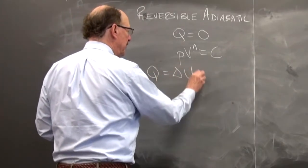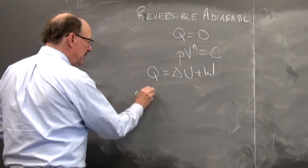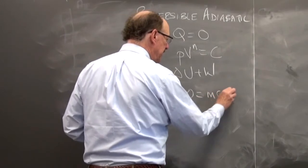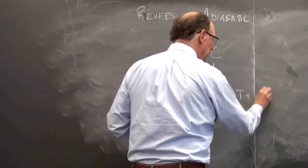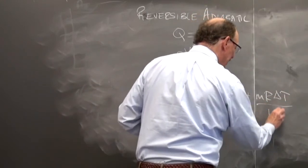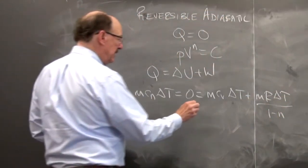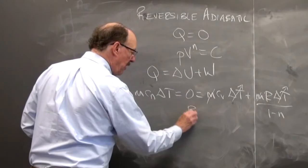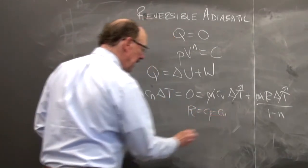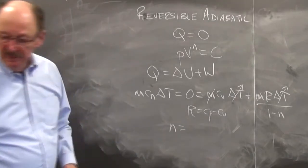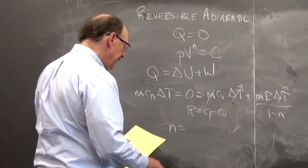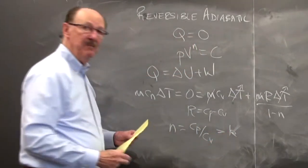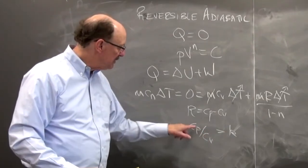But if I use the first law Q is equal to delta U plus W, then I have M C sub n delta T is equal to 0 is equal to M C sub v delta T plus MR delta T over 1 minus N. And so the M and the delta T goes out. I know that R is equal to C sub p minus C sub v and we find that N is equal to C sub p over C sub v is equal to K. So in chapter 5 we said the ratio of the specific heats was K.